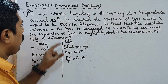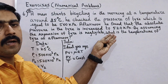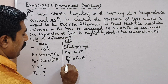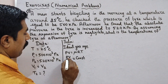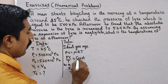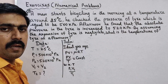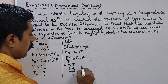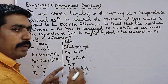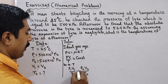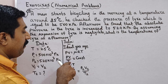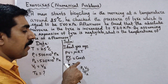For the morning state: pressure P1, volume V1, temperature T1 — this equals a constant. For the afternoon state: P2, V2 divided by T2 — this also equals the same constant. Therefore, P1V1 divided by T1 equals P2V2 divided by T2.